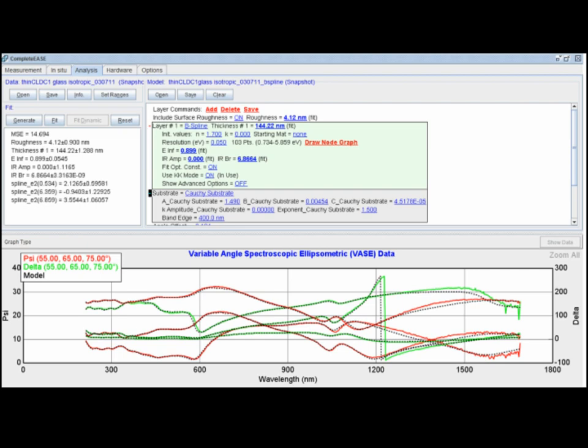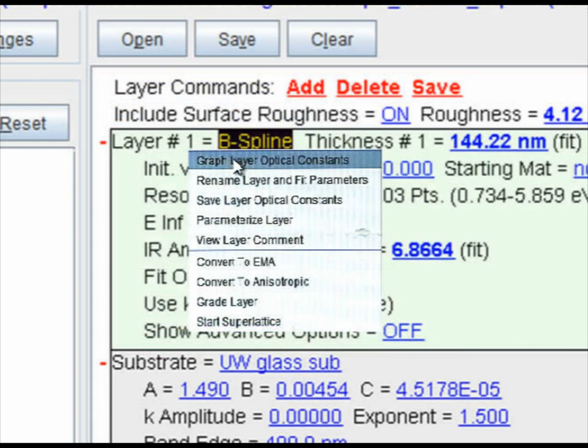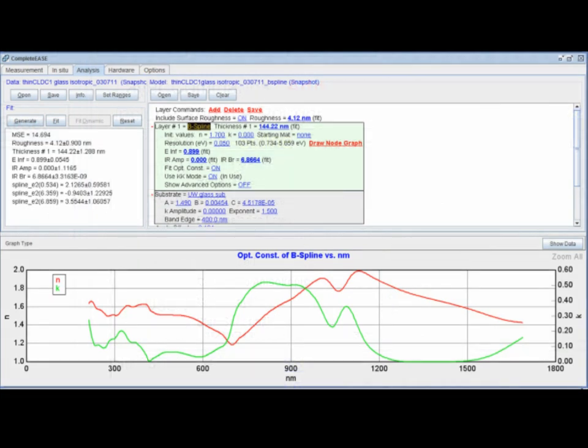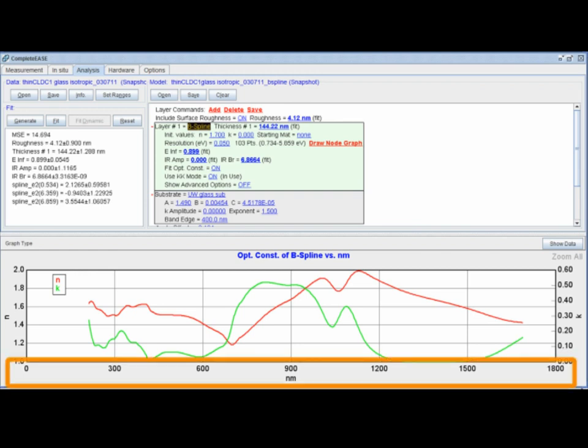Now that we've fit a good model to our psi and delta data, it's important to look at what we're interested in, which is our refractive index of the material versus wavelength. If we right click on our model, we can graph our optical constants. Here on the left axis, we have the magnitude of N, or the real component of our refractive index. On the right hand side axis, we have the magnitude of K, or our imaginary or absorptive component of our refractive index, versus wavelength, which is on the X axis.